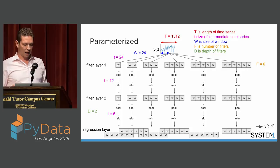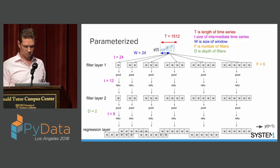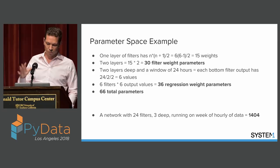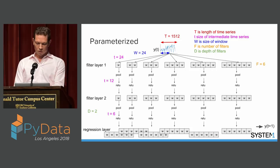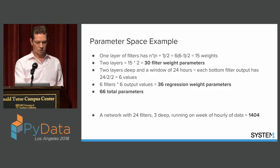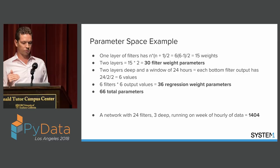At the end there's a regression layer that takes the output from all this and runs a regression trying to predict Y(t+1). Counting all the weights — all the parameters we're going to learn — in the two-layer, six-filter-wide example there are 66 total parameters: 30 filter weights and 36 regression weight parameters. If you set the parameters to three layers deep, 24 filters wide, running on a week of hourly data, there'd be about 1,400 parameters — the parameter space explodes as you make things bigger, as you'd expect.